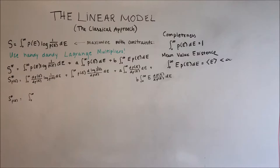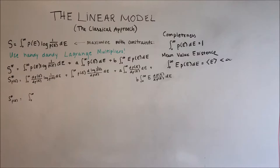By taking the derivative with respect to p of E and setting that equal to 0, we can derive a form of the probability distribution and then use the constraints to find a particular solution.